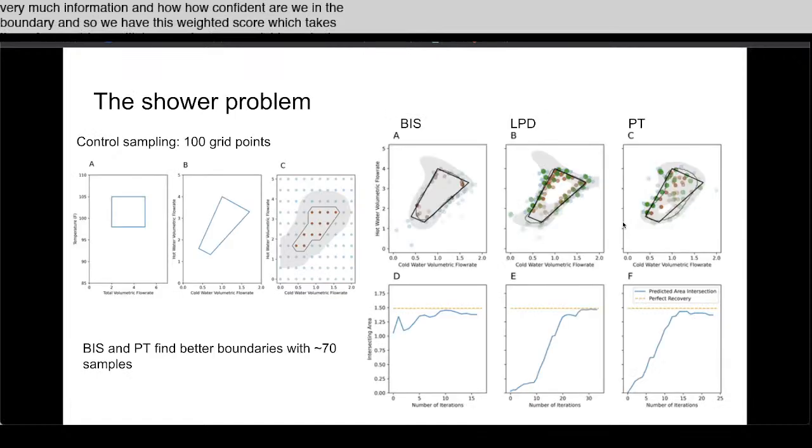Here's how we went about doing the work. This is the shower problem that I indicated. The kind of brute force way of doing this is you make say 100 samples in the space, you figure out whether it's inside or outside.